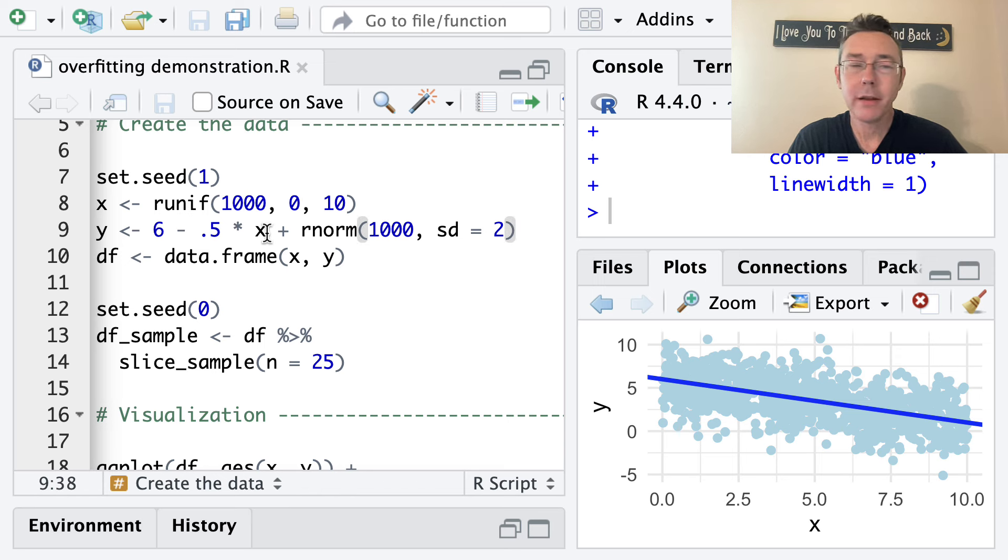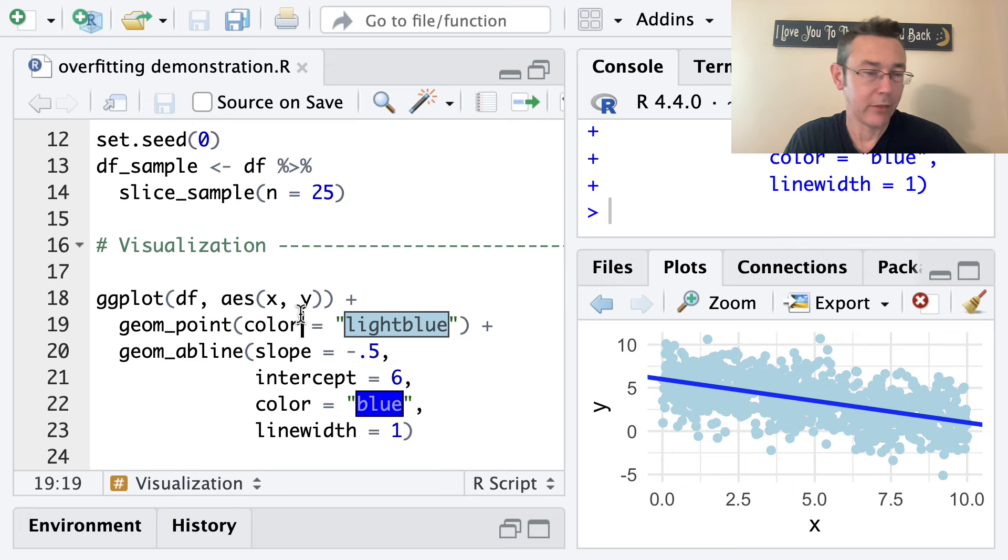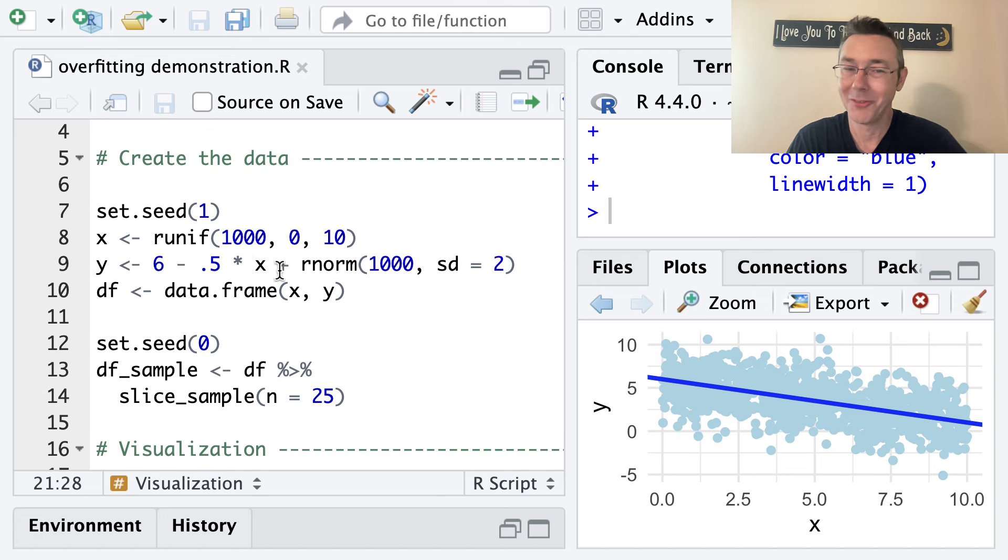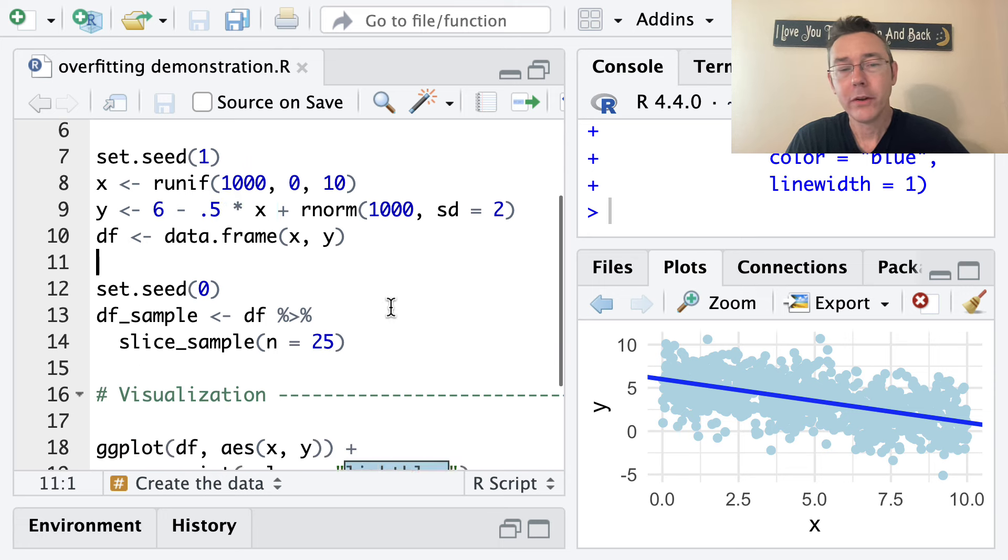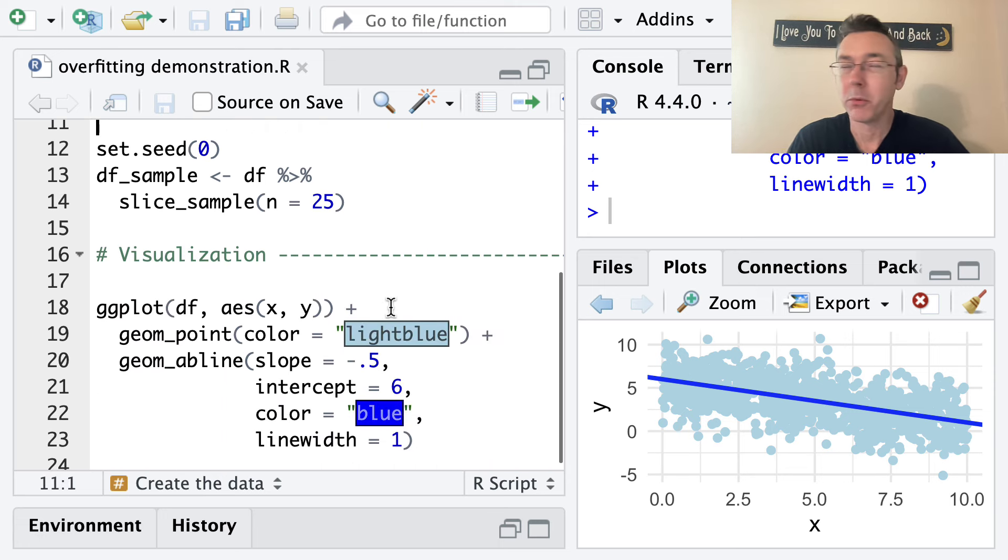And then made a y variable using a linear relationship y equals six minus 0.5x with some random noise. So I've generated 1000 random variables with mean zero and standard deviation two. And then I've just visualized that. I've literally plotted everything and put in that exact line with a slope of negative one half and a y intercept of six. So that's coming directly from this.